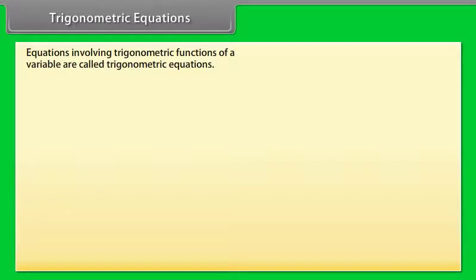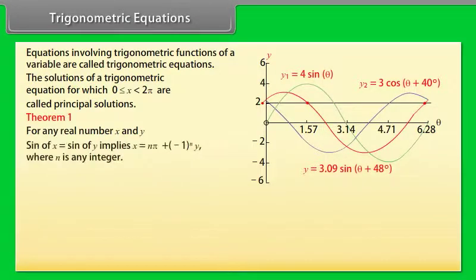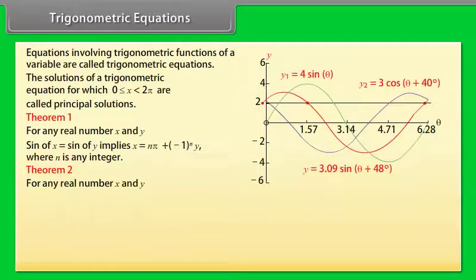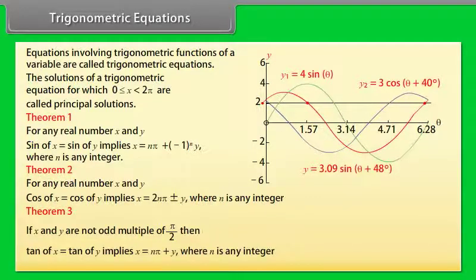Trigonometric equations. Equations involving trigonometric functions of a variable are called trigonometric equations. The solutions for which 0 ≤ x < 2π are called principal solutions. Theorem 1: sinx = siny implies x = nπ + (−1)ⁿy, where n is any integer. Theorem 2: cosx = cosy implies x = 2nπ ± y, where n is any integer. Theorem 3: If x and y are not odd multiples of π/2, then tanx = tany implies x = nπ + y, where n is any integer.